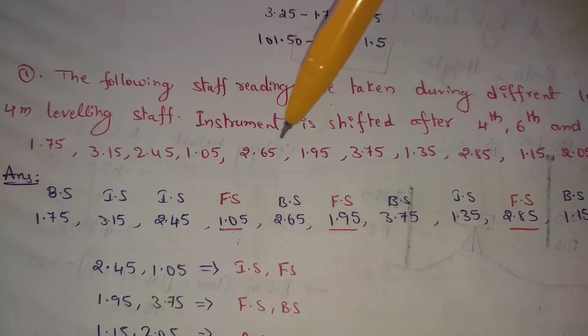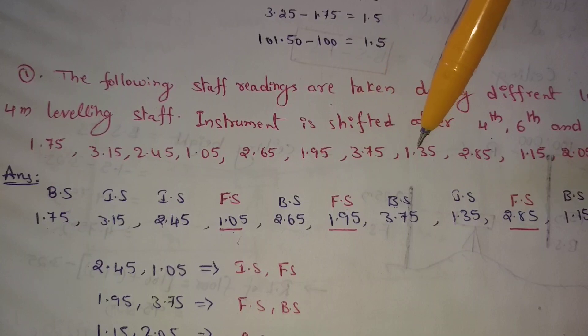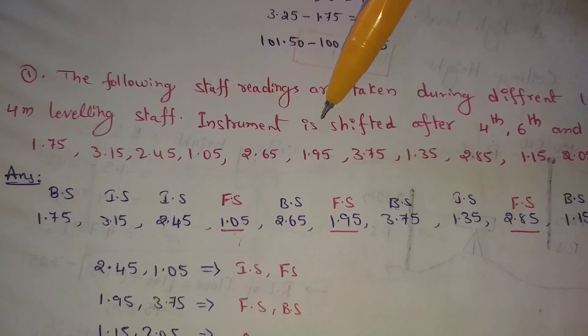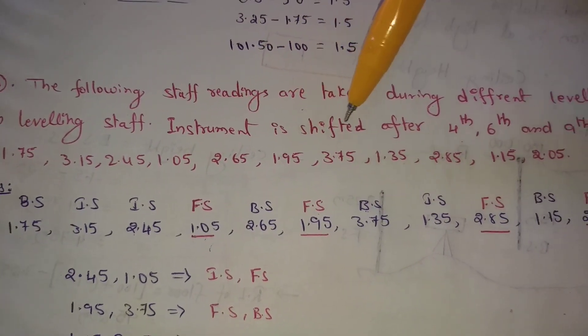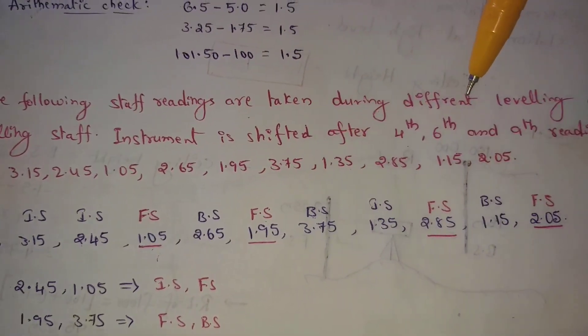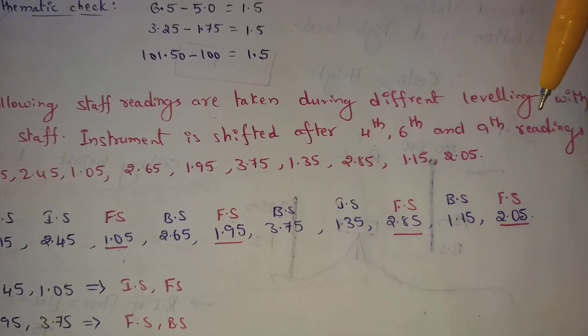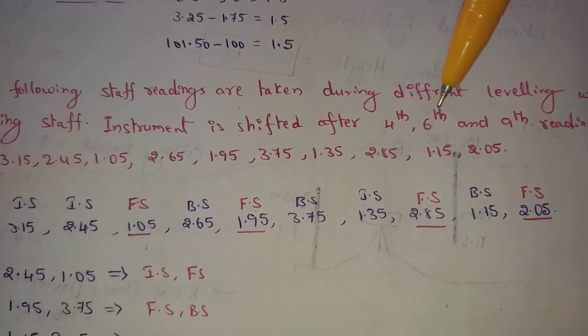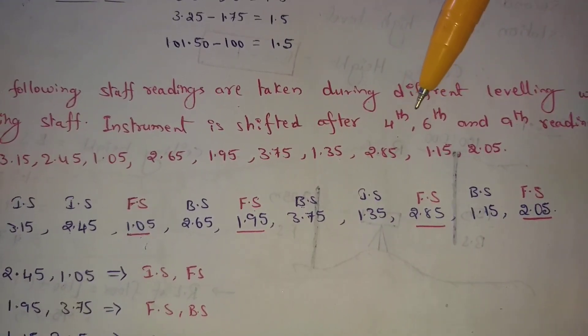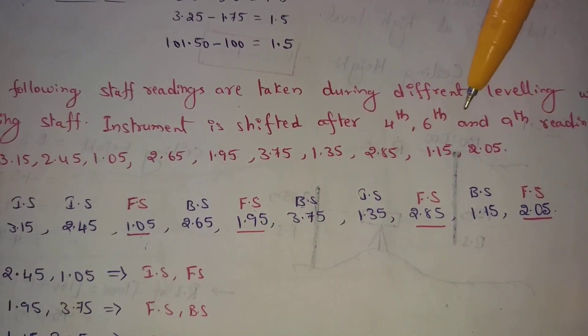The instrument is shifted after the 4th, 6th, and 9th reading. The instrument is shifted to the 4th, 6th, and 9th station point.